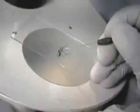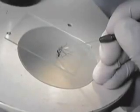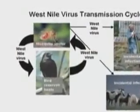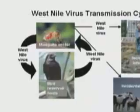The principal transmission cycle of West Nile virus is between mosquitoes and many species of birds. Mosquitoes become infected with West Nile virus when they feed on an infected bird. About 10 to 14 days after the mosquito bites the infected bird and gets the virus, the mosquito can transmit the virus to a person, another bird, or another kind of animal.